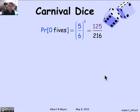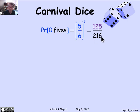Let's think about the probability of rolling no fives. If five is my favorite number, what's the probability that I roll none of them? Well, there's a five-out-of-six chance that I don't roll a five on the first die, and on the second die, and on the third die. Since the die rolls are assumed to be independent, the probability of no fives is (5/6)³, which comes out to be 125/216.